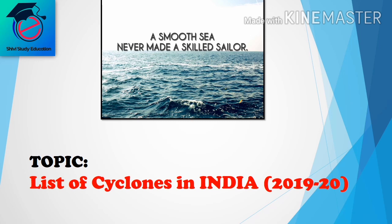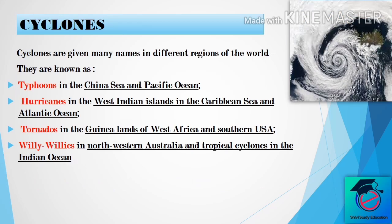Let's start with the topic. First, we will discuss about cyclones and their regional names. The first one is Typhoon, known in the China Sea and Pacific Ocean. The next is Hurricanes in the West Indian Islands, Caribbean Sea, and Atlantic Ocean. Third is Tornadoes in the Guinea lands of West Africa and southern USA. Fourth is Willy-Willies in northwestern Australia, and the last is Tropical Cyclones in the Indian Ocean.